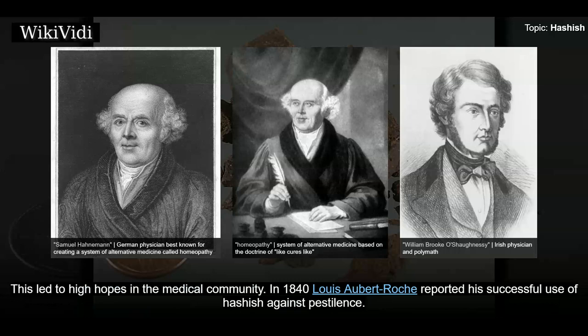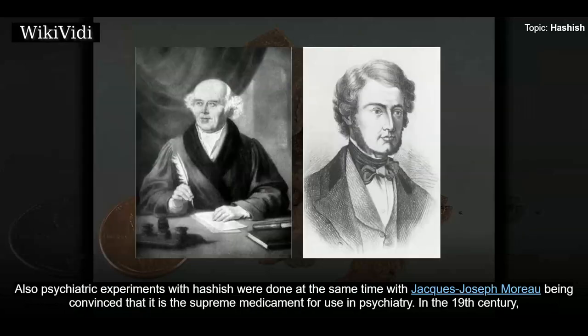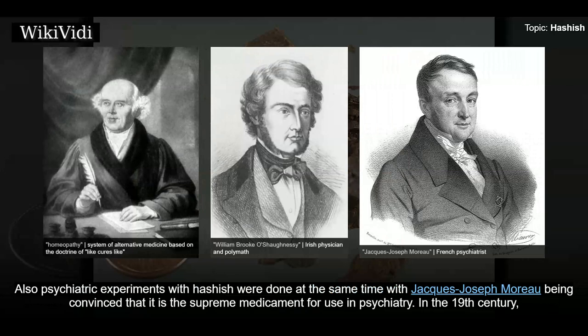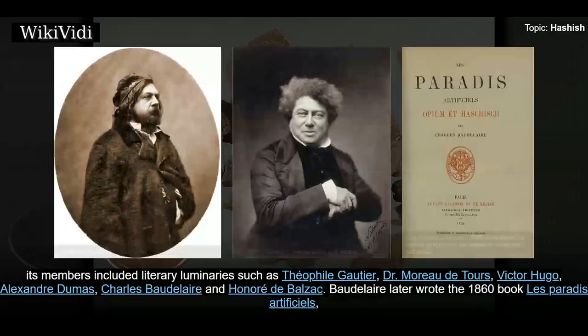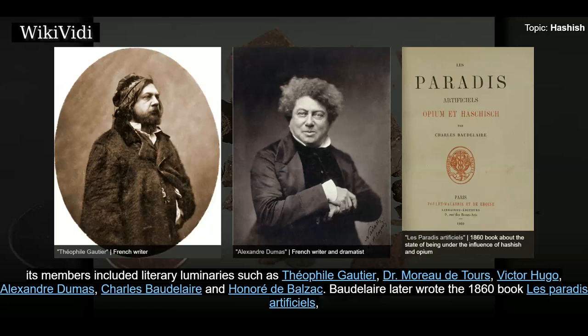This led to high hopes in the medical community. In 1840, Louis Aubert-Roche reported successful use of hashish against pestilence, and psychiatric experiments with hashish were conducted, with Jacques Joseph Moreau being convinced it was the supreme medicament for use in psychiatry. In the 19th century, hashish was embraced in some European literary circles — most famously the Club des Hashischins, a Parisian club dedicated to the consumption of hashish and other drugs, whose members included Théophile Gautier, Dr. Moreau de Tours, Victor Hugo, Alexandre Dumas, Charles Baudelaire, and Honoré de Balzac.